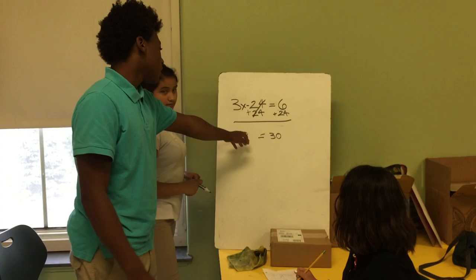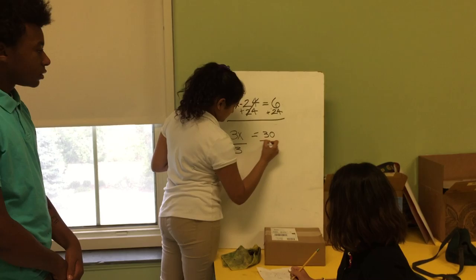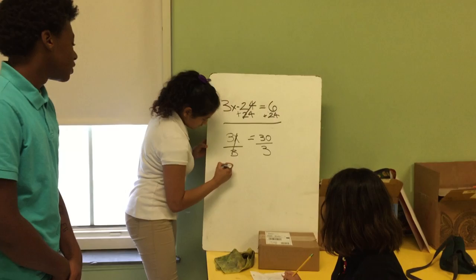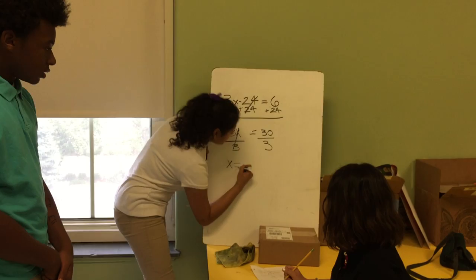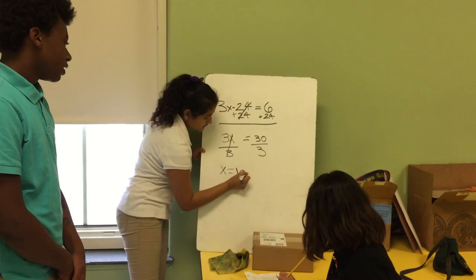Now you have to divide 3 by both sides to get x by itself. Cross this out because 3 divided by 3 equals 1. Bring your x down. And then 30 divided by 3 equals 10.